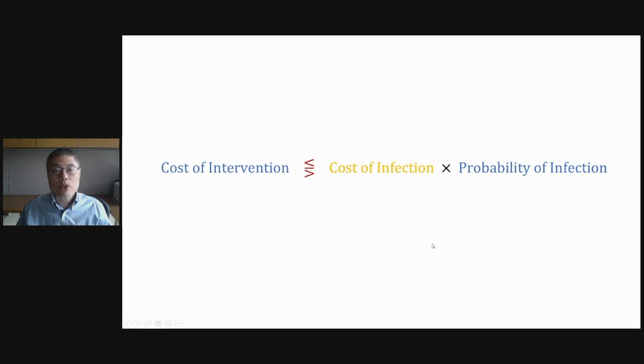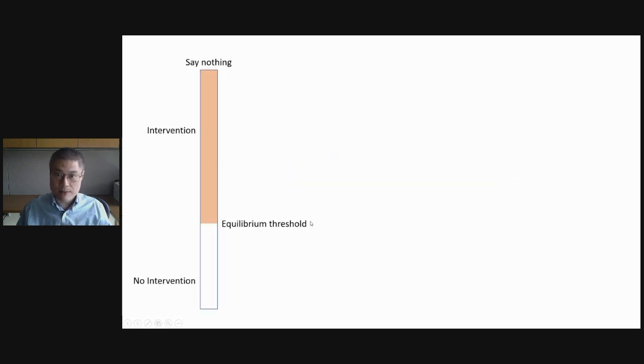Here, let's actually compare between two simple information design strategies. Shown on the slide is the first strategy, which is to say nothing. In other words, the information designer knows what is going on, but promises to say nothing in the beginning and did say nothing. In that case, the equilibrium threshold is the same as the one we saw before. So this bar looks exactly the same as we saw before. Above the threshold, people would take intervention, below not. That's one strategy.